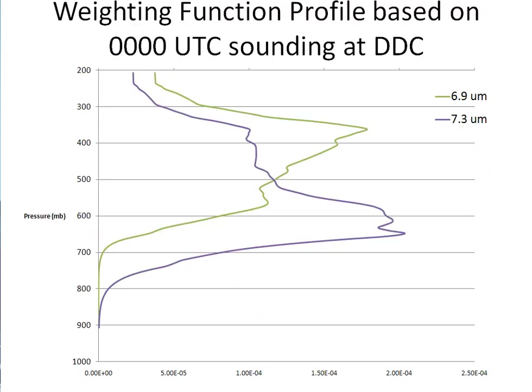The weighting function profile associated with the Dodge City sounding shows that most of the time low-level features will not appear in the water vapor imagery; however, occasionally they do, as we showed in this presentation. Knowing what you're looking at will increase your situational awareness so you won't be caught off guard. You may view weighting function profiles in real time on the SIMS website via the CURL button in the VISIT view controls frame, or find a link on the student guide for this training session.